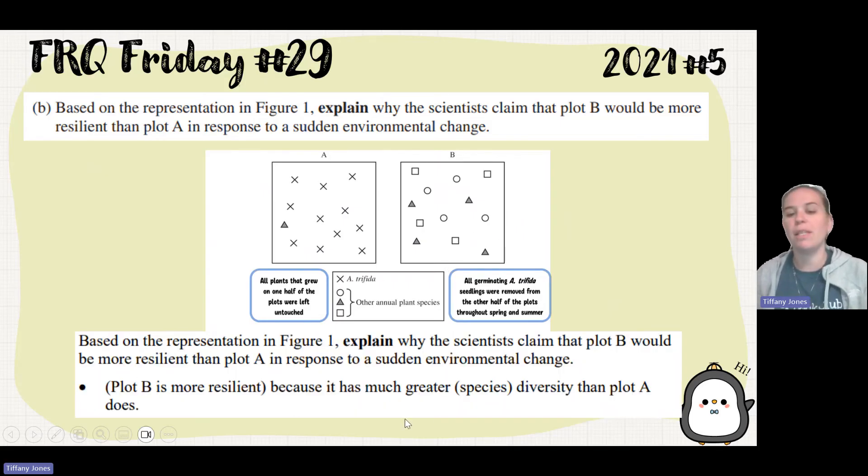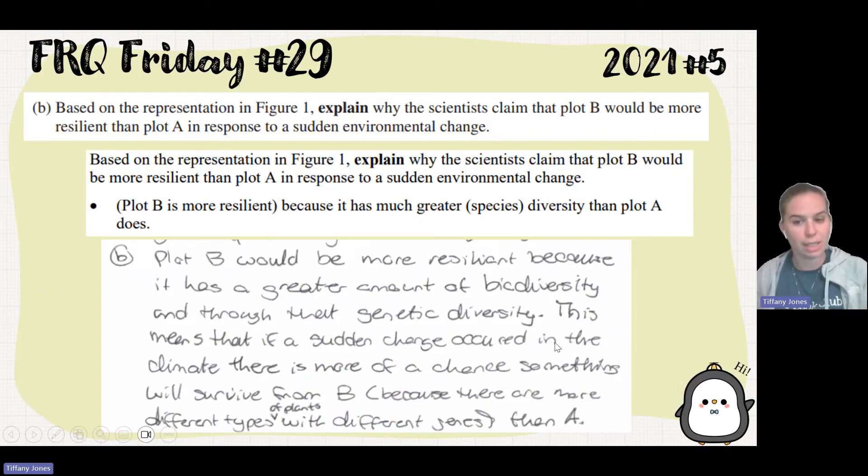The student said plot B would have more resilience because it has a greater amount of biodiversity and through that genetic diversity. This means that if a sudden change occurred in the climate, there is more of a chance something will survive from B because there are more different types of plants with different jobs than A.